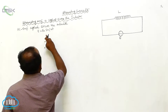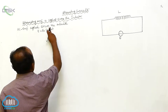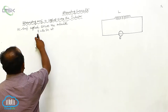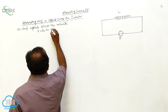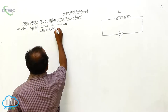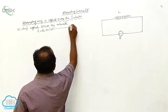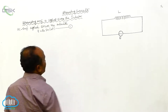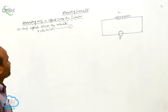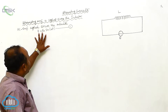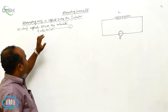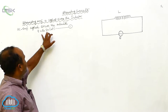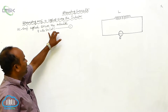AC EMF applied across the inductor is equal to E₀ sin ωt. This is called the first equation. Whenever the inductor is applied to an AC source, the EMF is equal to E₀ sin ωt.